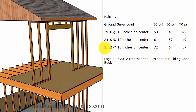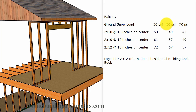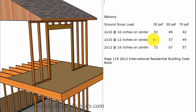For 2x12 at 16 inches on center, we can go out 72 inches for the cantilever if we have a 50 pounds per square foot ground snow load. That's the amount of snow that falls on the ground. For 2x10 at 16 inches on center with a 30 pounds per square foot ground load, we can go out 53 inches maximum. If we change to 12 inches on center, that becomes 61 inches. The chart is available to look at for free online.